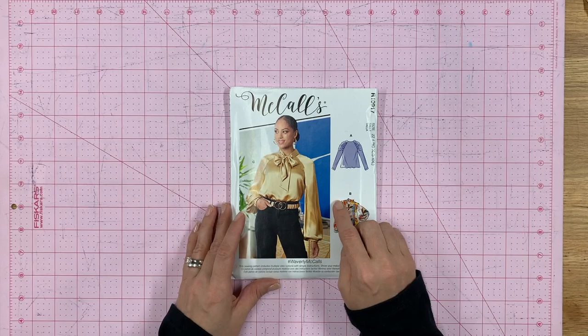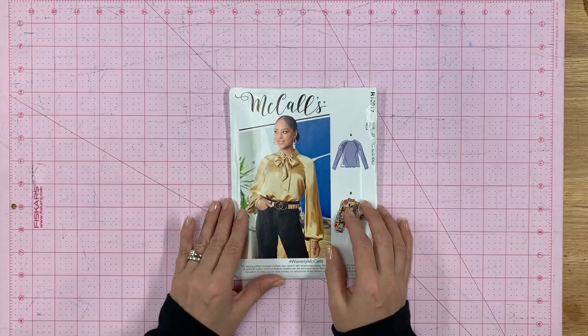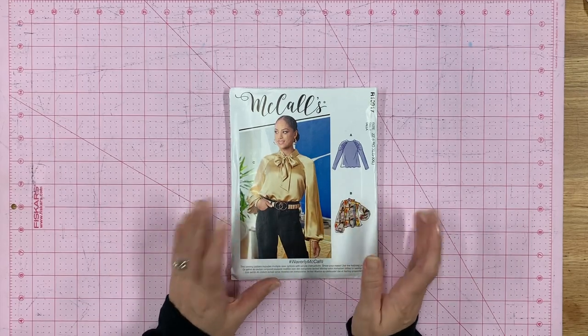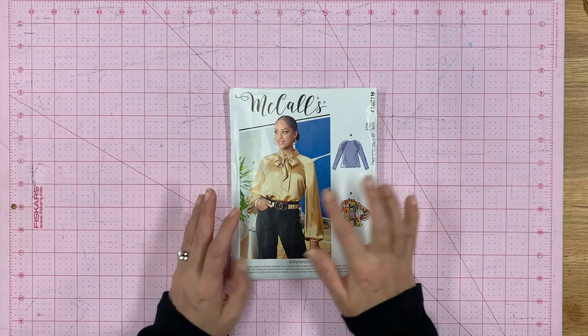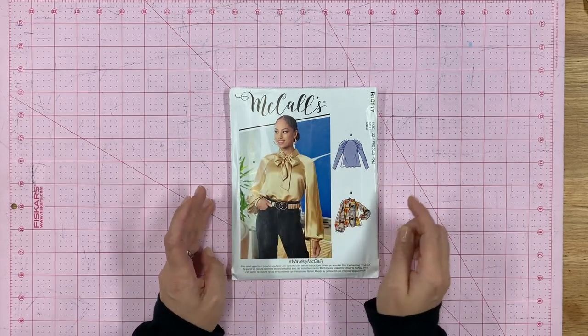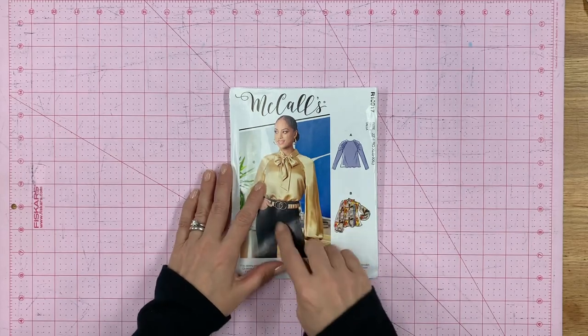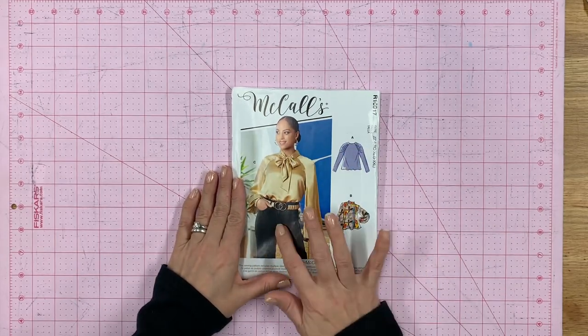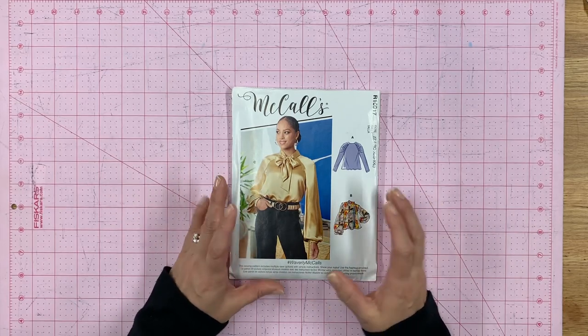I saw this pattern at the store and I absolutely love it. It has three different types of sleeves and it has a pussy bow. Definitely a great pattern. When you're looking at a pattern, it's great that you look at the picture and the outline and make sure that this pattern is potentially going to look great on you.